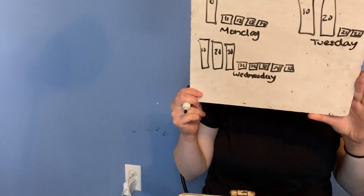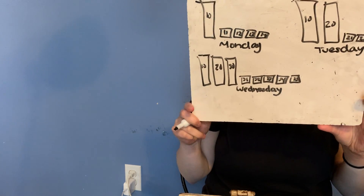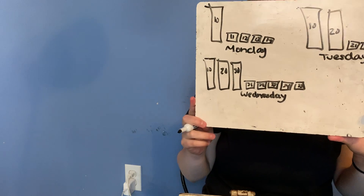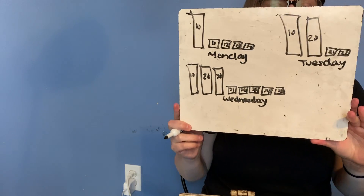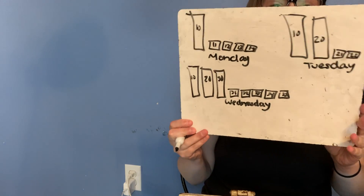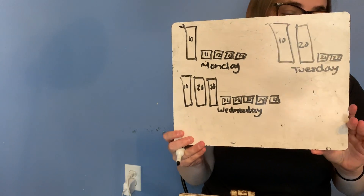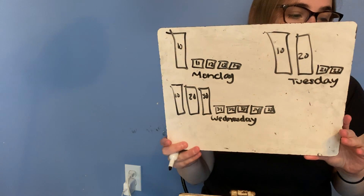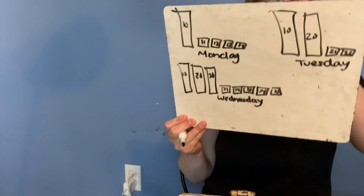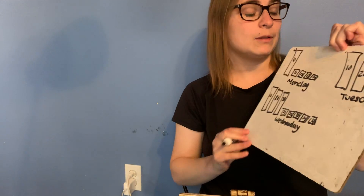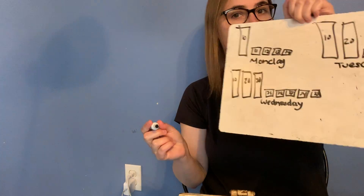So now I drew to represent all of those jumping jacks, but I need to find how many he did all together. So I'll first count by 10s, and then I'll count on my ones. I'm going to label my count as I go.